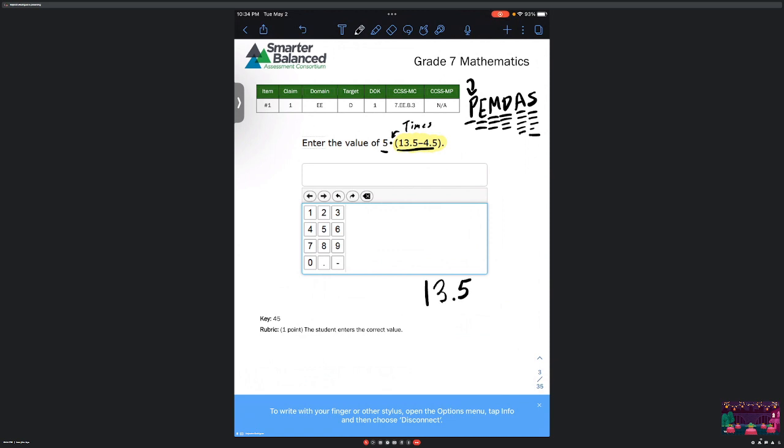So 13.5 minus 4.5. Line it up. 5 minus 5 is 0, the decimals carried over. 3 minus 4, we can't do that, so I'm gonna go ahead and borrow the 1. So 3 becomes 13, 1 becomes 0. Now we do it again: 13 minus 4 is 9.